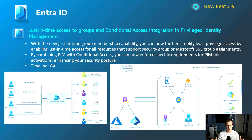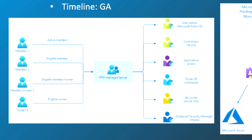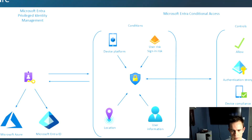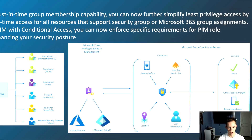Shifting into Entra ID, I have three larger security updates. The first requires P2 licensing and covers PIM-enabled integration with groups as well as activating certain roles with conditional access. As shown in the left-hand diagram, you can PIM-enable a group where users can elevate themselves into that group with just-in-time access to resources, removing the perpetual footprint. Similarly, with PIM and conditional access, you can require phishing-resistant MFA like a FIDO2 key to activate a Global Administrator role. This is available now.